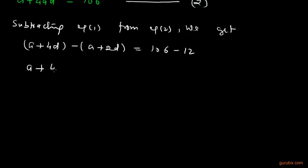This is A plus 49D minus A minus 2D equals 94. Now we can cancel out this positive A with this negative A, and we can subtract 2D from 49D. We get 47D equals 94, and this gives that D equals 2.